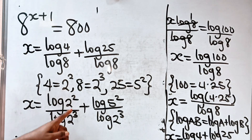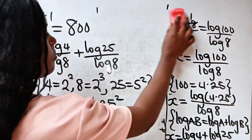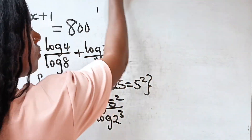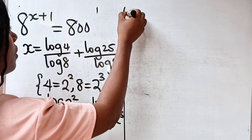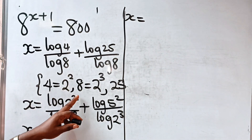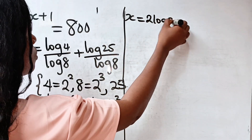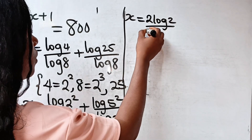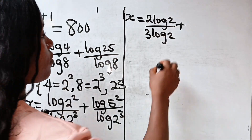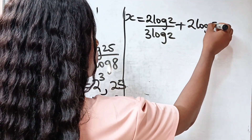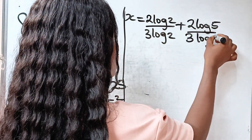Using the power rule, the exponents come down to multiply. We have x is equal to 2 log 2 divided by 3 log 2, plus 2 log 5 divided by 3 log 2.